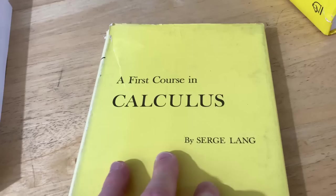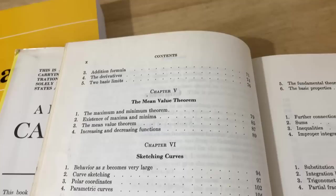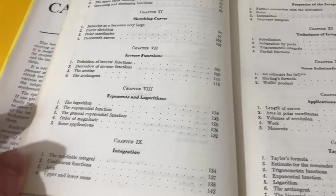This is a really old edition. And here's a quick look at the contents: numbers and functions, graphs and curves, the derivative, sine and cosine. So all single variable stuff. I'm going to go quickly: mean value theorem, sketching curves, inverse functions, exponents and logarithms.